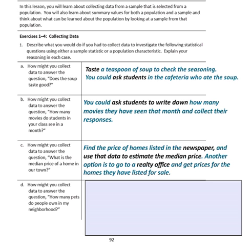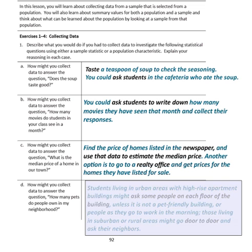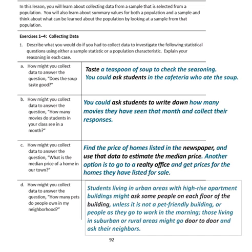Question D: How might you collect data to answer the question, 'How many pets do people own in my neighborhood?' Students living in urban areas with high-rise apartment buildings might ask people on each floor of the building, or ask people as they go to work in the morning. Those living in suburban or rural areas might go door to door and ask their neighbors.